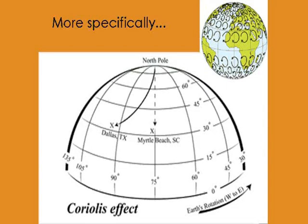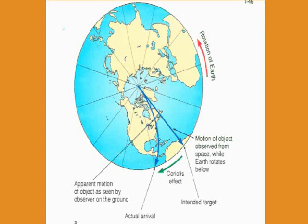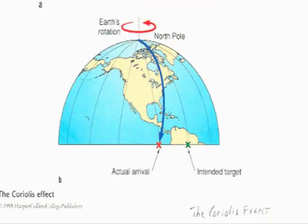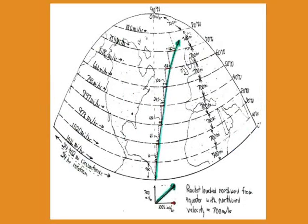The Coriolis Effect is not a real force, but is invented to explain motion as observed from a rotating frame of reference. The necessity is not because the frame of reference is moving, but because it is accelerating. A rotating frame is an accelerating frame because it is constantly changing its direction. A moving object, when viewed from a rotating frame of reference, will be deflected to the side. However, when viewed from a fixed frame of reference, objects move in straight paths.